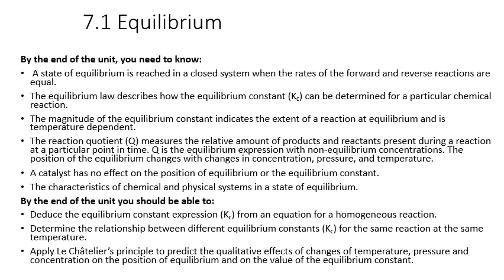In today's lesson we're going to cover the following: knowing that a state of equilibrium is reached in a closed system — dynamic equilibrium. The equilibrium law is described by an equilibrium constant unique to a particular reaction. The size of the equilibrium constant indicates the extent of reaction at equilibrium and is temperature dependent. The reaction quotient Q measures the relative amounts of products and reactants at a particular point in time. Q is the equilibrium expression with non-equilibrium concentrations and changes with concentration, pressure, and temperature. A catalyst has no effect on equilibrium or its constant, and you should know the characteristics of chemical and physical systems in a state of equilibrium.